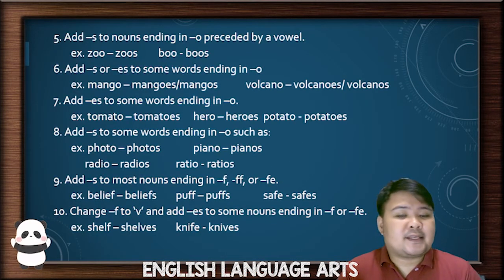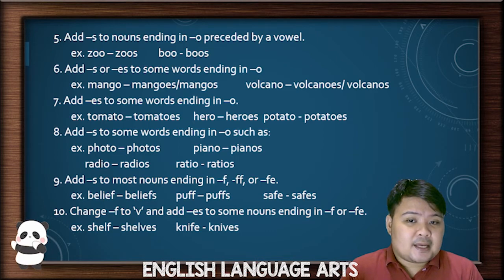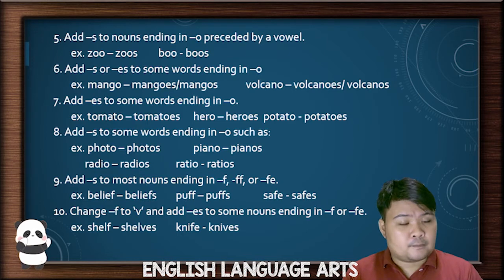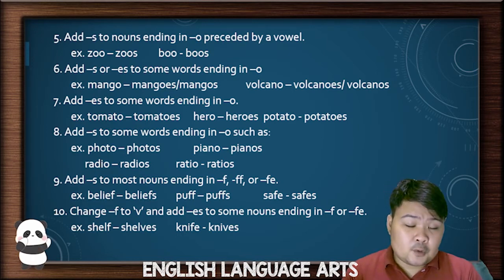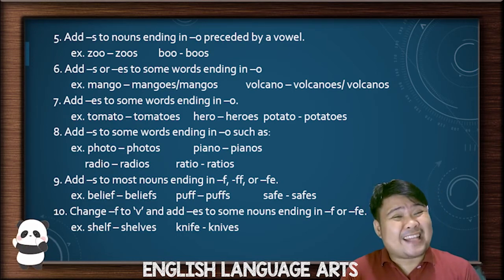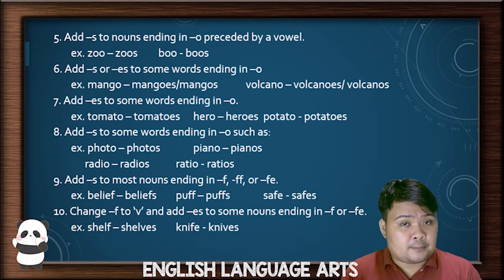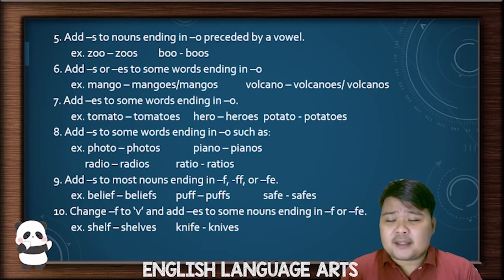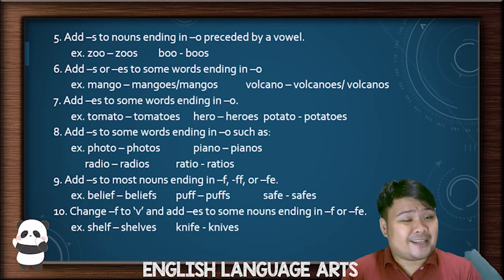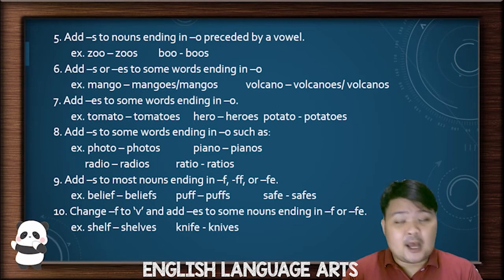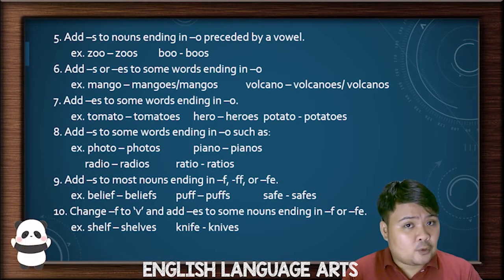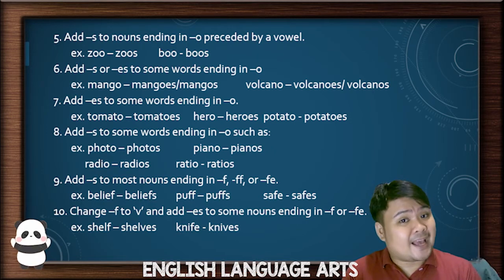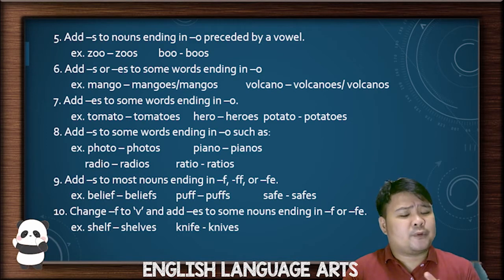Rules 5, 6, 7, and 8 cover nouns that end in O. If it ends in O and before the O is a vowel, then just add S — like zoos and boos. But for certain words ending in O, you can either add S or ES — both are accepted. For example, mango can be mangos or mangoes. The same is true with the word volcano.